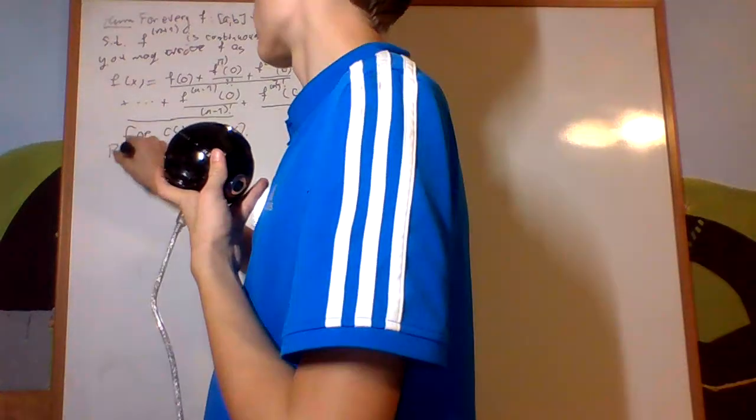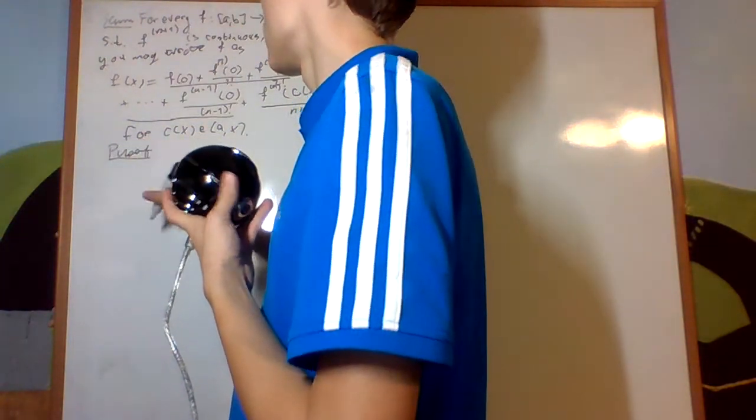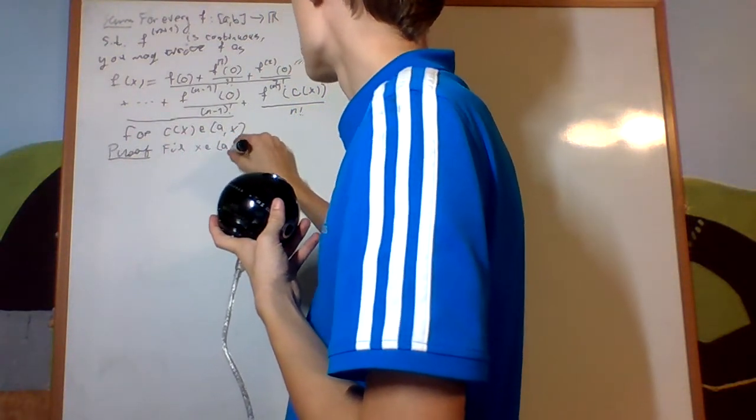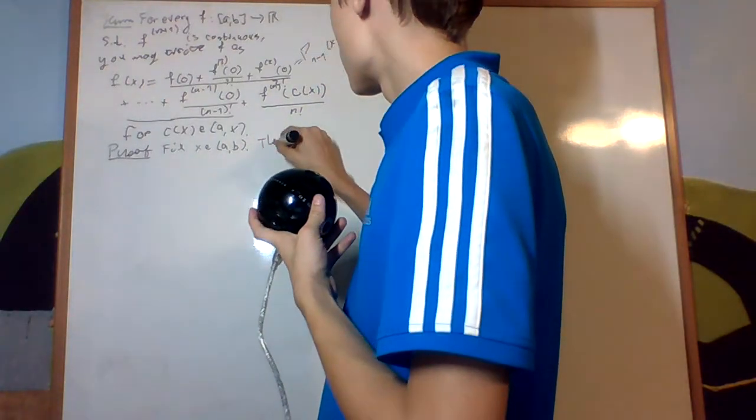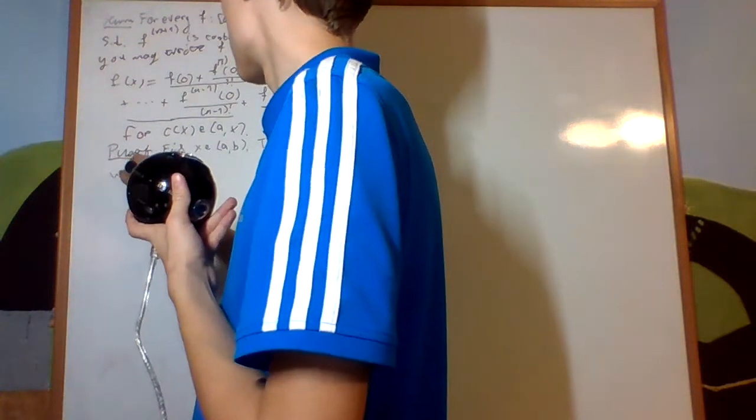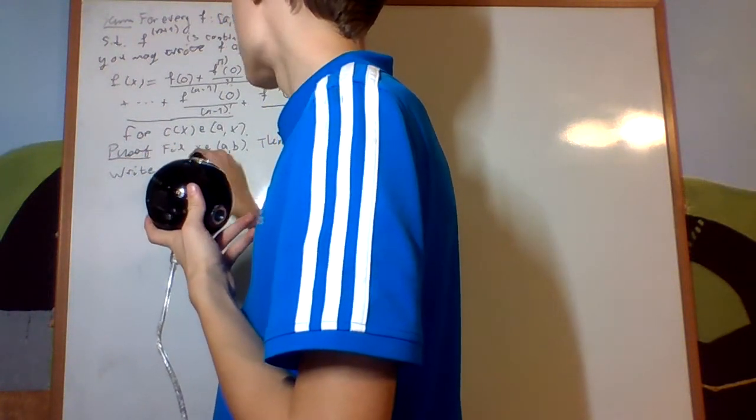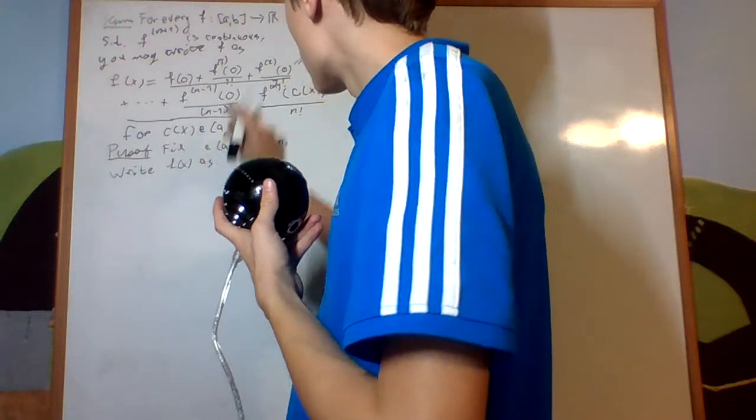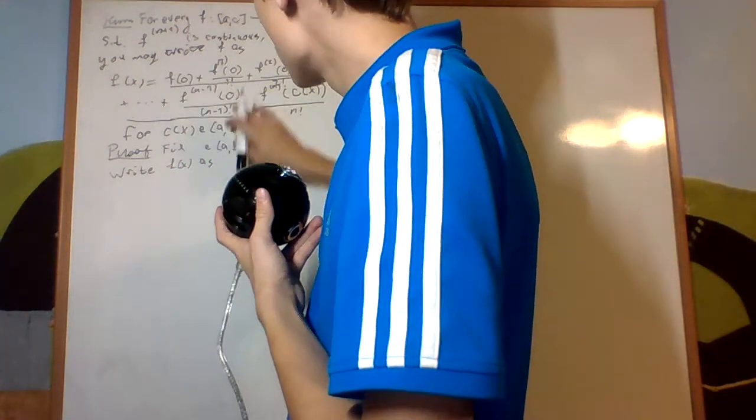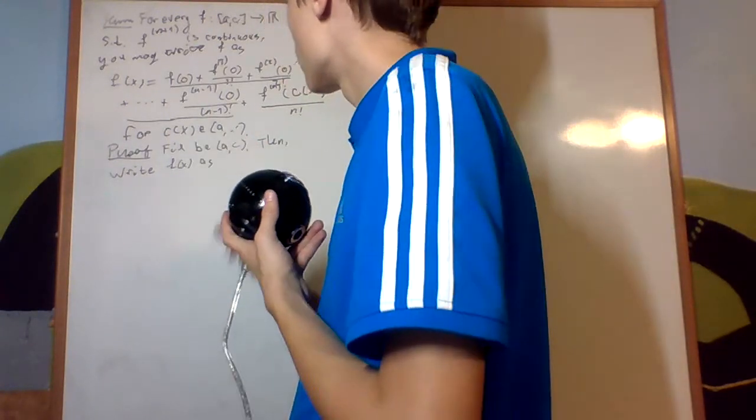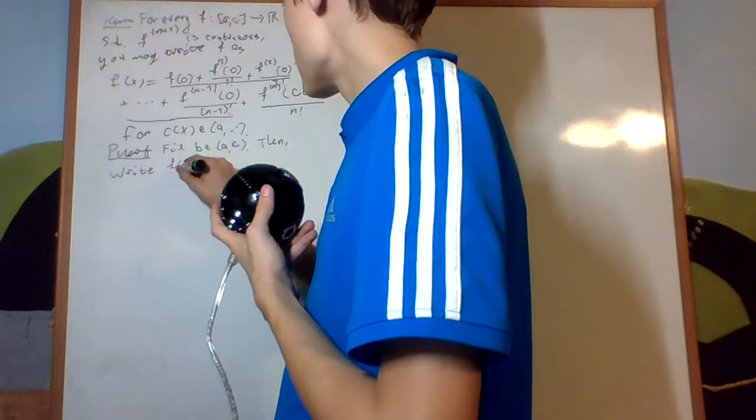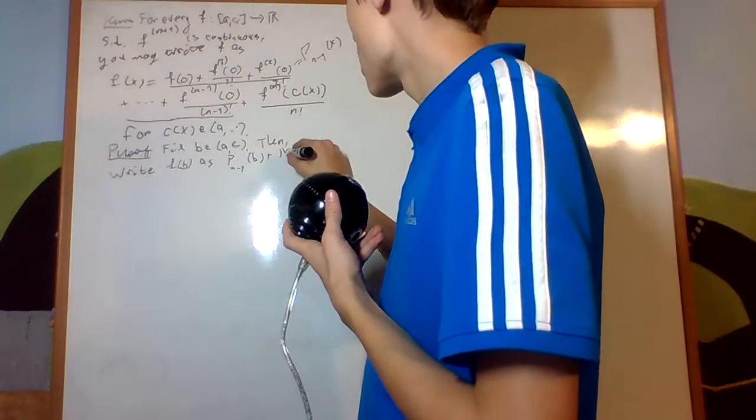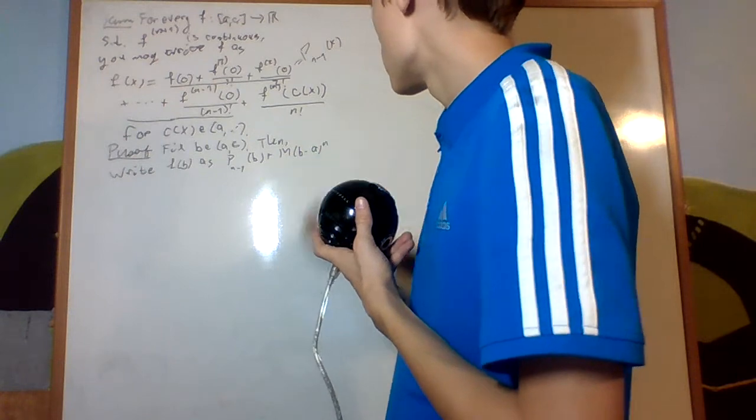So proof. Fix x in element AB. Then write f of x as, I'll write, I'll do from the interval a c. And I'll choose b, and write f of b as p n minus 1 of b plus m times b minus a to the nth.